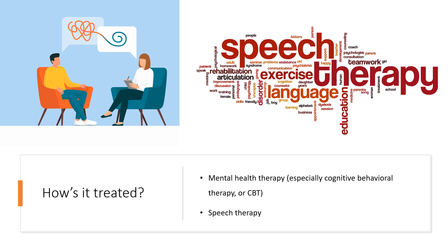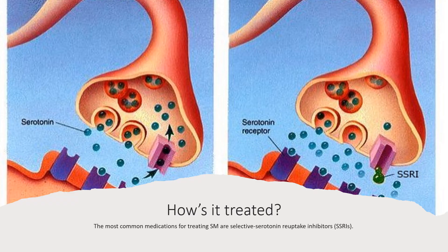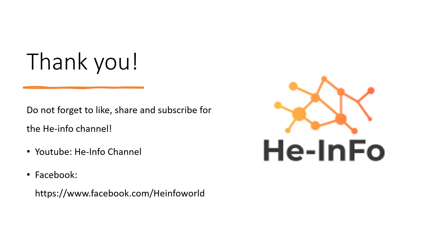Some practitioners believe there is evidence indicating that anxiolytics can be helpful in treating children and adults with selective mutism, to decrease anxiety levels and thereby speed the process of therapy. The most common medications for treating SM are selective serotonin reuptake inhibitors, or SSRIs.